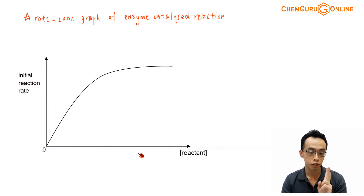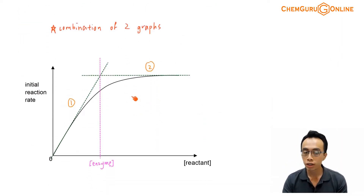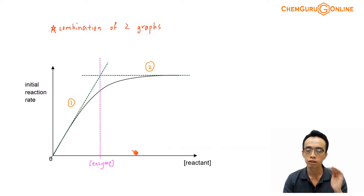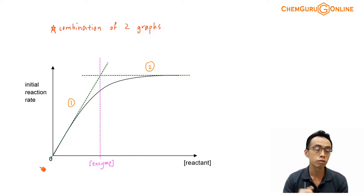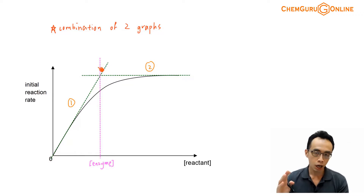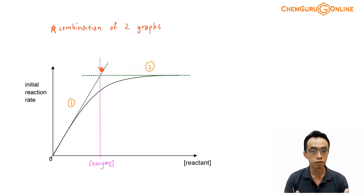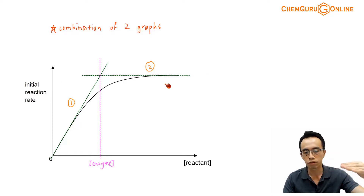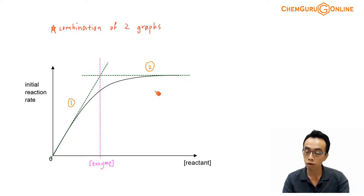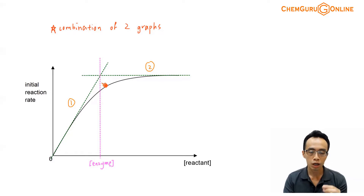Now this graph we can actually split into two portions. We can treat this as a combination of two independent graphs. The first portion, at the beginning, when the concentration of the reactant is low, the rate of the reaction increases as the concentration of the reactant goes up — that's graph number one, a straight line passing through the origin. In the second part, where the concentration of the reactant is high, this is a horizontal graph — there's no change in the rate of the reaction. This is graph number two. The intersection between graph number one and graph number two corresponds to the concentration of our enzyme.